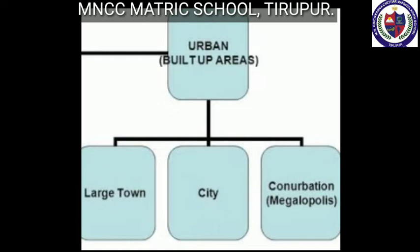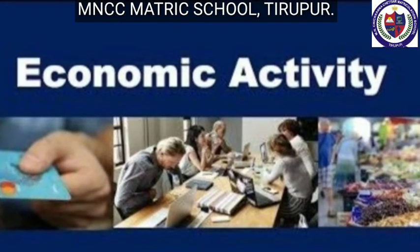Metropolitan cities accommodate populations between 10 lakhs and 50 lakhs - example: Madurai. Mega cities have more than 50 lakh population - example: Greater Chennai. A conurbation is a region comprising a number of cities, large towns, and other urban areas - example: Delhi conurbation.